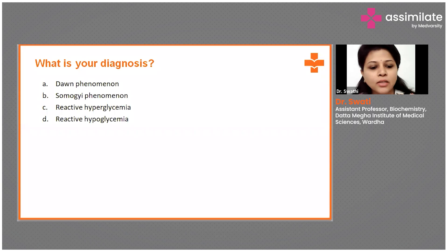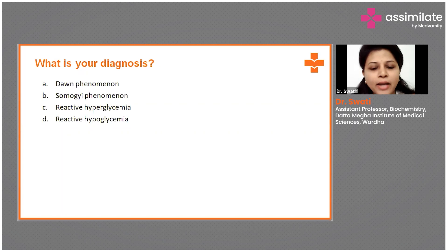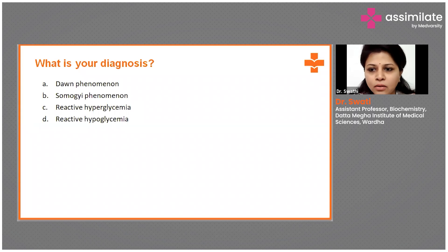The right answer is Somogyi phenomenon. Let me explain my answer. Before we get to know why Somogyi phenomenon is the right answer, why don't we ask somebody from the audience why they chose reactive hypoglycemia? Can you define reactive hypoglycemia in the chat? Are there any links between the Somogyi phenomenon and reactive hypoglycemia? I'll hold for a few seconds and then explain.